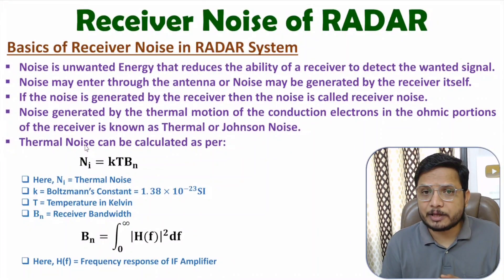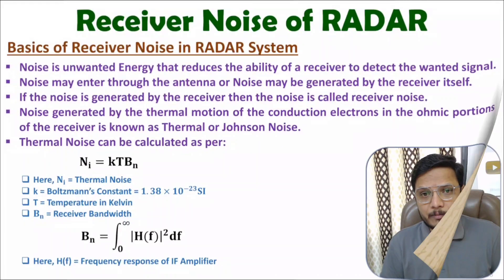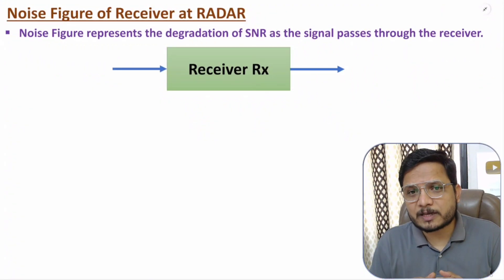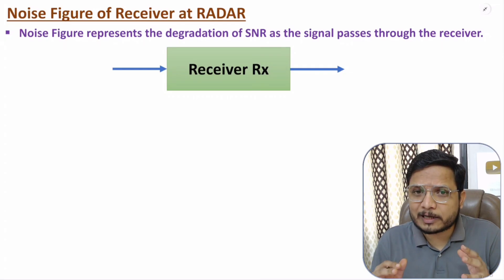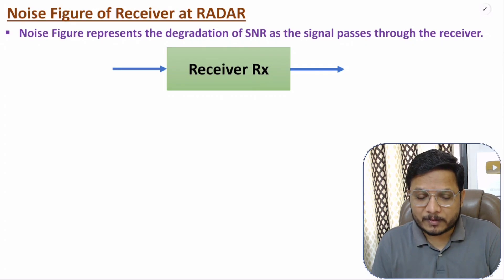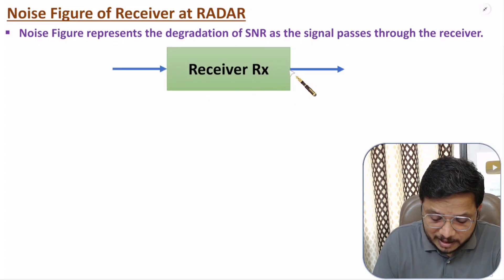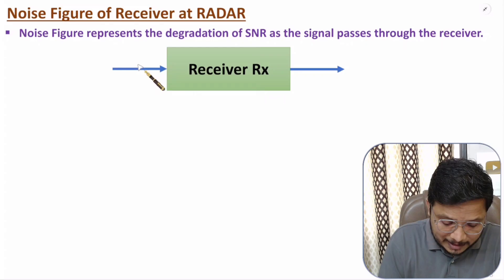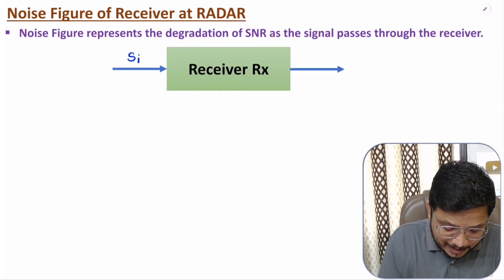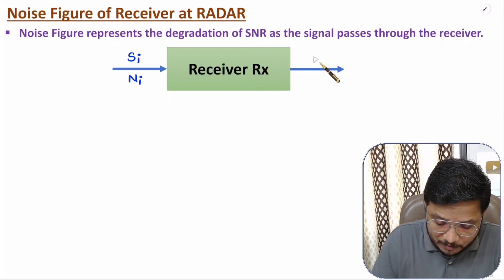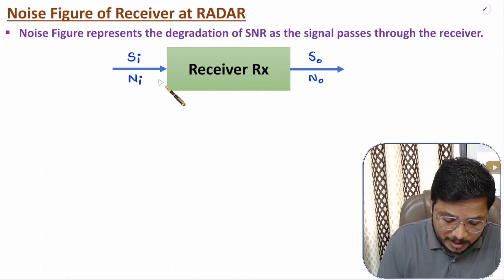Now I'll explain the noise figure of a radar system. Noise figure explains the degradation of the signal-to-noise ratio. Here we are determining the noise figure of the receiver, so we will be identifying the degradation of SNR because of the receiver. The receiver has an input and an output. At the input side, we have signal power SI and noise power NI. At the output, we have signal power SO and noise power NO. Based on the signal-to-noise ratio, we can calculate the noise figure.